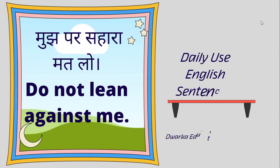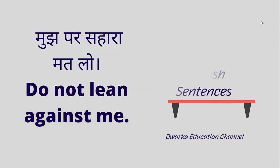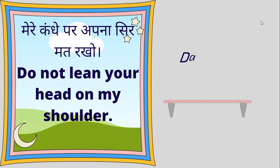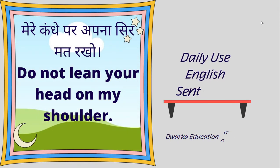Mujh par sahara mat lo — Do not lean against me. Mere kandhe par apna sir mat rakko — Do not lean your head on my shoulder.